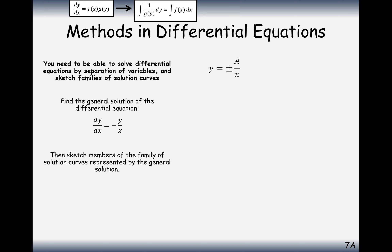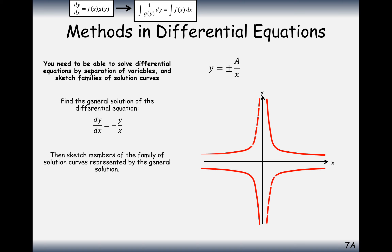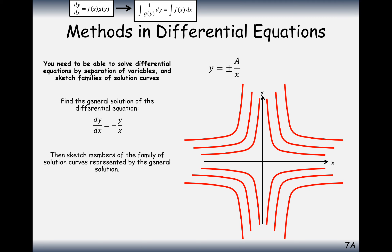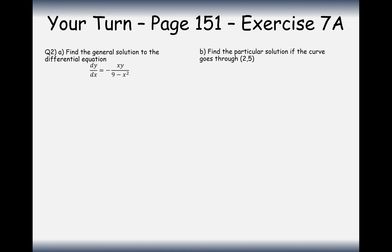When drawing the family of curves, it's y equals plus or minus A over x, so we need to include both the plus and the minus in our graph. It's not just in two quadrants — it's going to be in all four quadrants. Increasing or decreasing the value of A (that is, e to the c) moves the curves in or out.